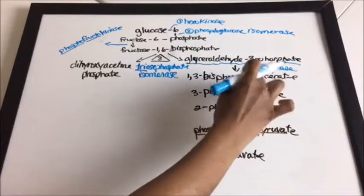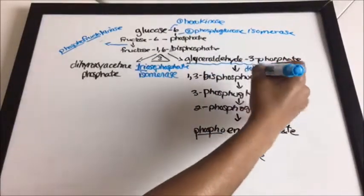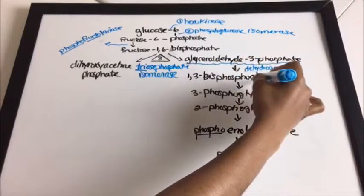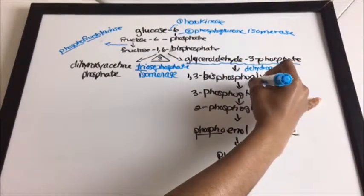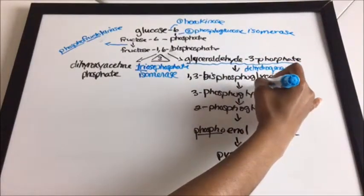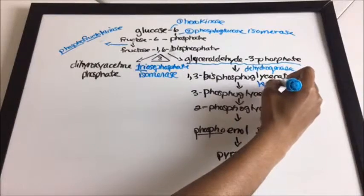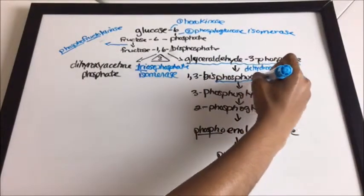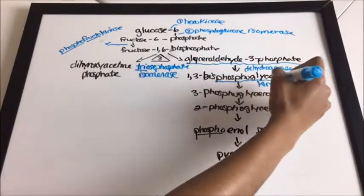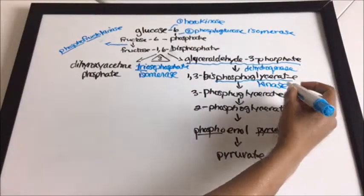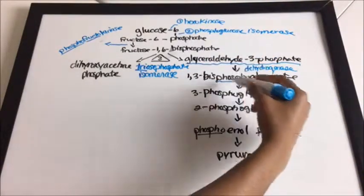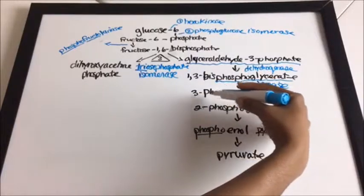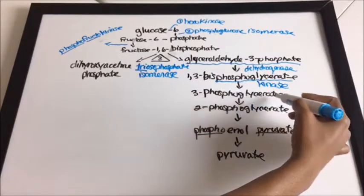The next enzyme is phosphoglycerate kinase — all you have to do is remember 'kinase.' Phosphoglycerate kinase is the enzyme between 1,3-bisphosphoglycerate and 3-phosphoglycerate.